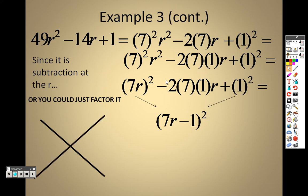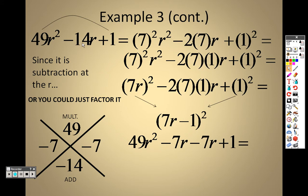Now keep in mind, you could just factor this problem. 49 times 1 is 49. So what multiplies to give you 49 that also adds to give you negative 14? Well, negative 7 and negative 7. So I would separate this as 49r squared minus 7r minus 7r plus 1 because negative 7r and negative 7r is negative 14r. So I can factor each of these by grouping.